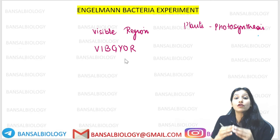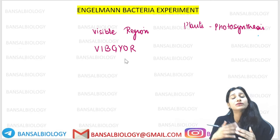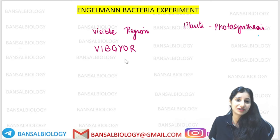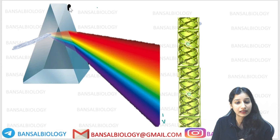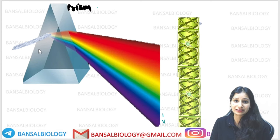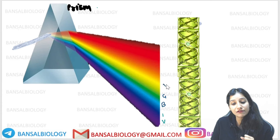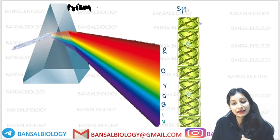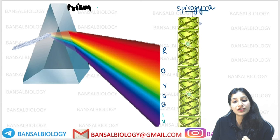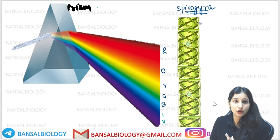This is the whole experiment — which wavelength is the most effective. When they used white light, it was divided into all colors using a prism. They placed Spirogyra in front of this spectrum. Spirogyra can do photosynthesis, so they placed it in front of the divided light.